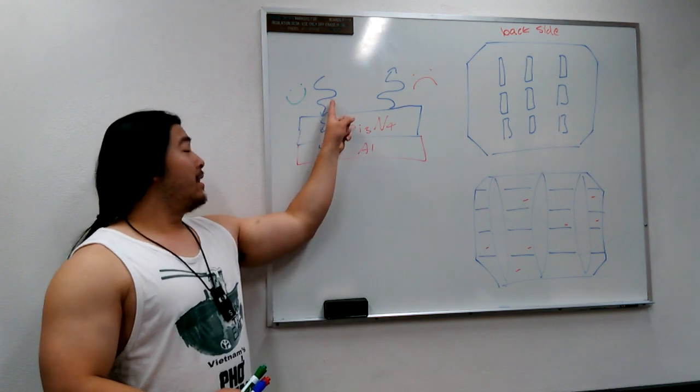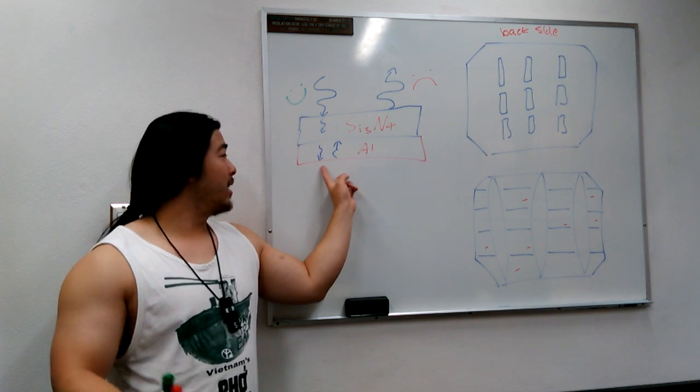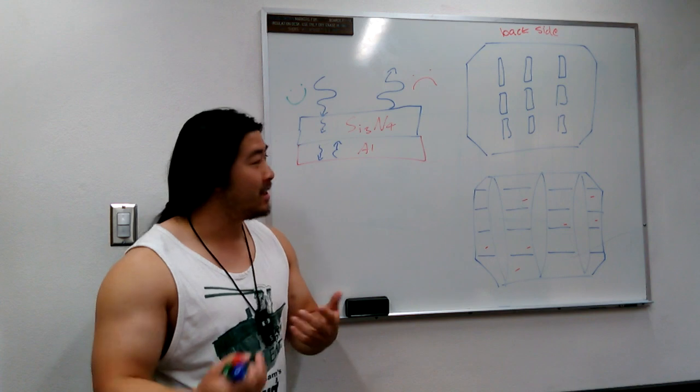When the light goes through the wafer, perhaps not all of it is absorbed. So the rear reflective coating will send whatever wasn't absorbed back through the wafer so it can be absorbed again. That's a good thing.